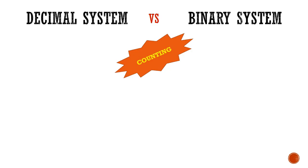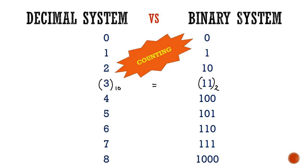In decimals, counting is done as 0, 1, 2, 3, 4 and so on, whereas in binary, the counting is done as 0, 1, 1 0, 1 1, 1 0 0 and so on. It means 3 in decimals is equal to 1 1 in binary system.